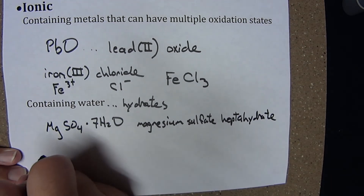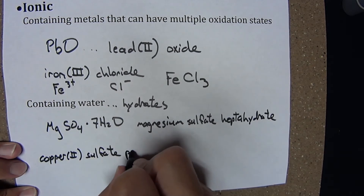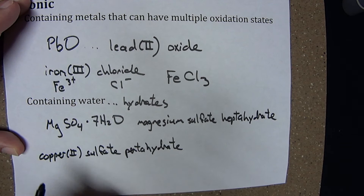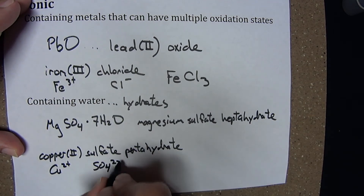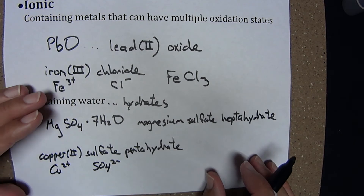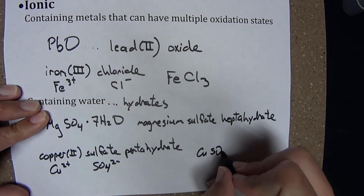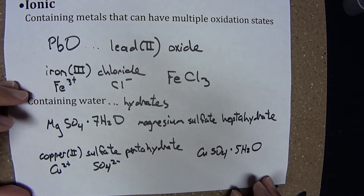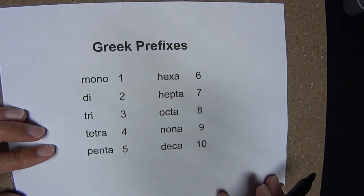Again, we should be able to go both ways. If we were given the name copper(II) sulfate pentahydrate, we should be able to come up with a formula. Copper is a transition element; here the copper exists in the +2 oxidation state. The sulfate anion has a −2 charge, so these ions exist in a 1-to-1 ratio. The formula is CuSO₄·5H₂O. To name hydrates, you'll need to commit to memory the names of the various Greek prefixes.